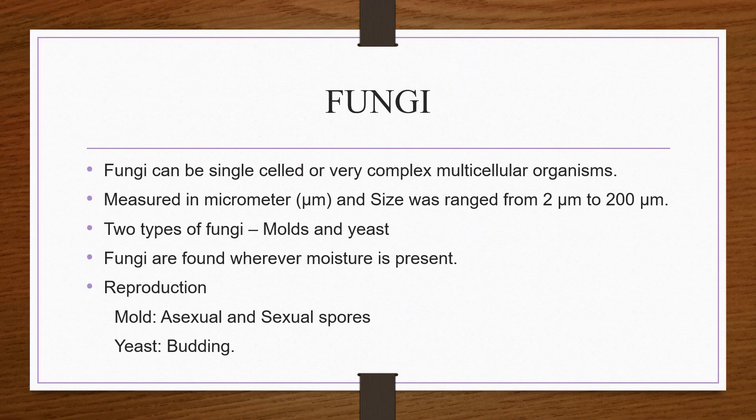Fungi characteristics. Fungi can be single-celled or multicellular organisms. Fungi are eukaryotic in nature. They are measured in micrometers, with size ranging from 2 micrometers to 200 micrometers. There are two types of fungi: molds and yeast.